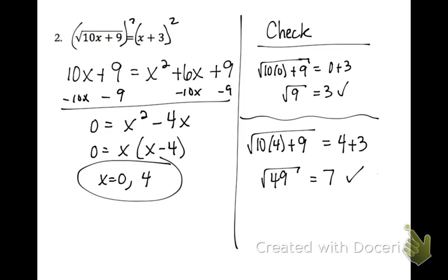On this one, we have a little bit of different factoring. Right here, whenever you don't have a c term, so whenever you don't have that last number without an x, you can just pull out your GCF, which was an x here. And then you have x times x minus 4. So x equals 0 and x equals 4. I checked both answers, and both answers worked out.